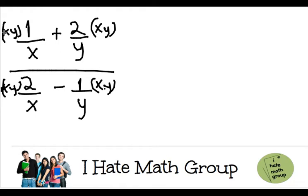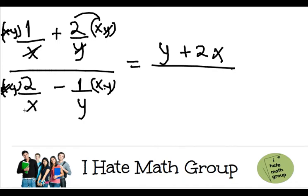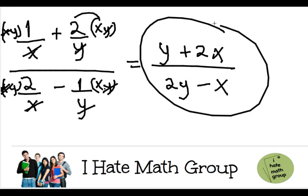So look what's going to happen. This x is going to eliminate with this x, so you're going to have y. This y is going to eliminate with this y and then 2 times x is just plus 2x. Over this x eliminates with this x and you have 2 y's, and then this y with this y and finally you have your x. And that's it.